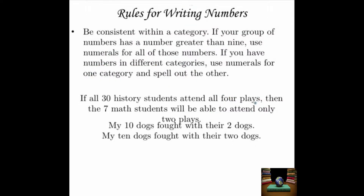Now that we've got the general rule out of the way, here are some specifics. First and foremost, be consistent. The whole point of all these rules for writing numbers is that you don't want to pull your reader out of whatever you're writing. You want them to keep reading and barely even notice whether you're using words or numerals. You want them to focus on what you're saying, not how you're saying it. If your group of numbers has a number greater than nine, use numerals for all of those numbers.